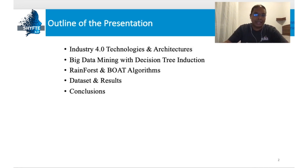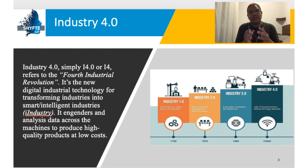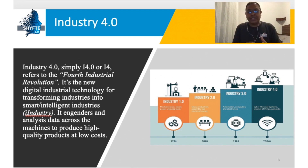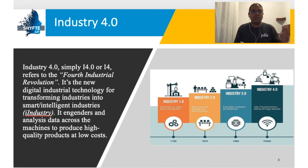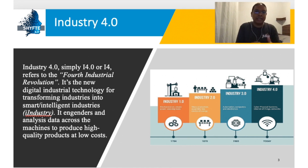Industry 4.0, the fourth industrial revolution, is a new digital technology to transform industry into intelligent industry. In the first industrial revolution, we replaced hand labor with machines, powered by water and steam. In the second industrial revolution, electricity was introduced as the main source of power. In the third industrial revolution, we introduced ICT and automation.